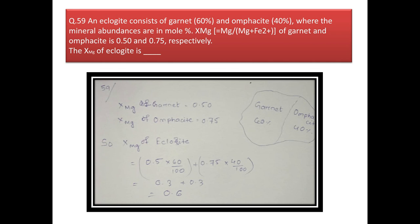Next question: an eclogite consists of garnet 60% and omphacite 40% (mole percentages). The mole fraction of Mg/(Mg+Fe) in garnet is 0.5 and in omphacite is 0.75. Find the mole fraction of Mg in the whole eclogite. Calculation: mole fraction in eclogite = (0.5 × 60%) + (0.75 × 40%) = 0.30 + 0.30 = 0.60.